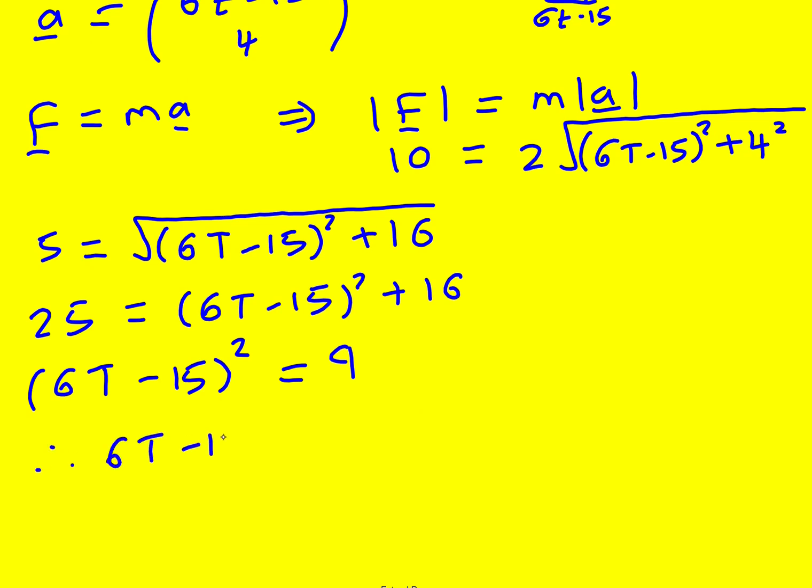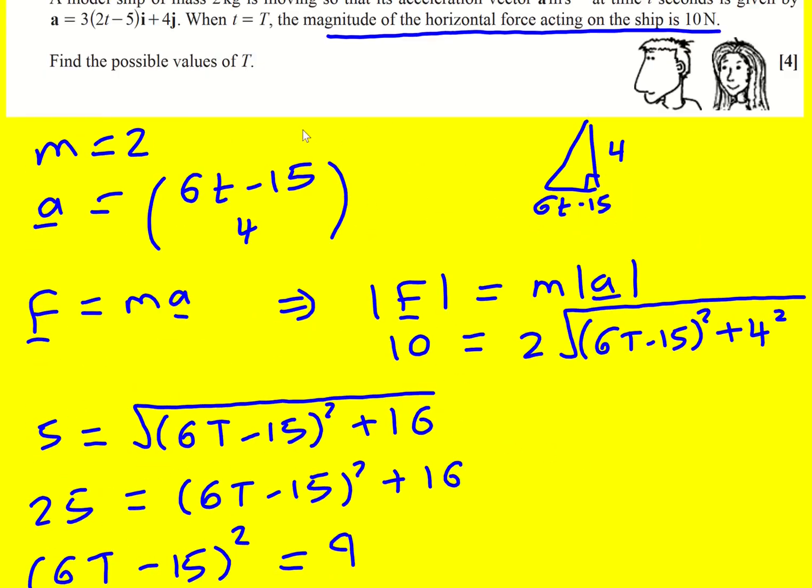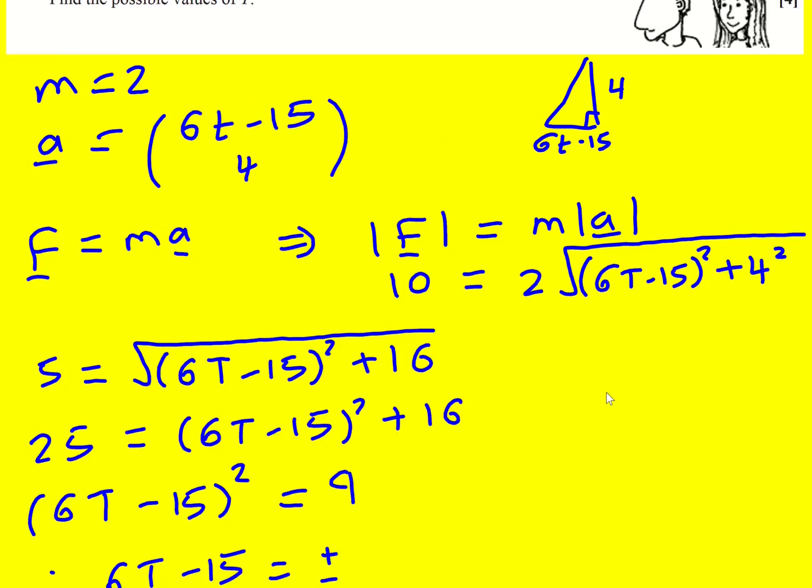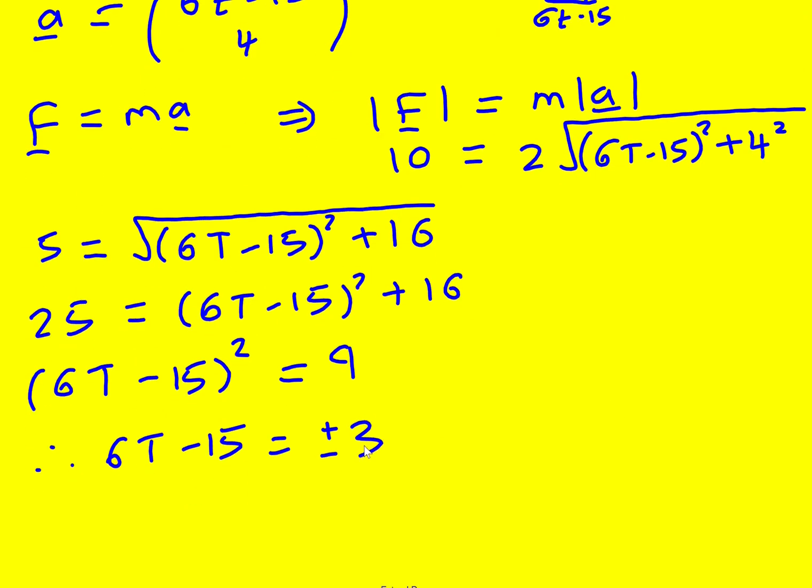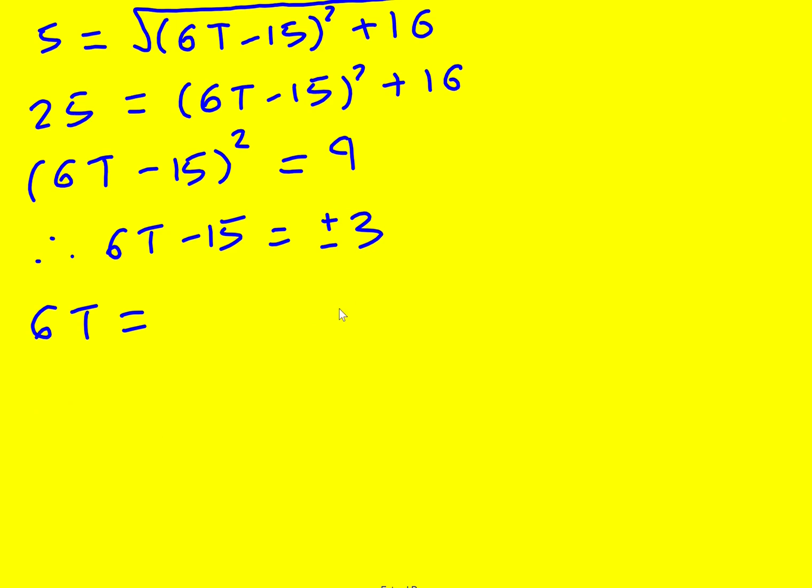6T minus 15 is going to be plus or minus. Don't forget 2 answers and actually it does say here the possible values of T so that's a bit of a hint. Plus or minus the square root of 9 which is 3. So 6T, when we use minus 3 it's going to be minus 3 plus 15 which is going to give me 12, or when I use 3 it's going to be 3 plus 15, 18.